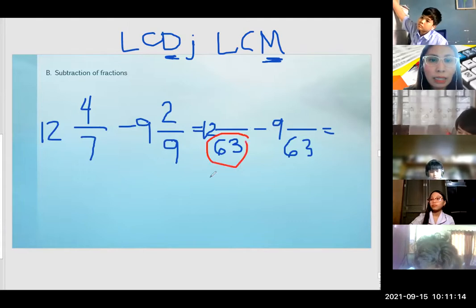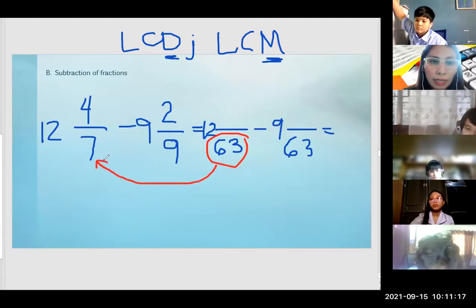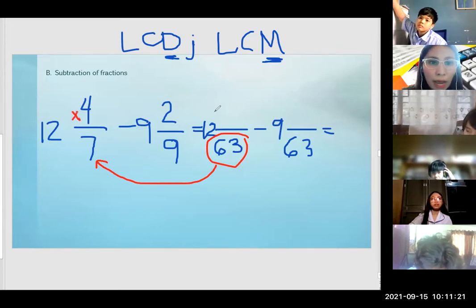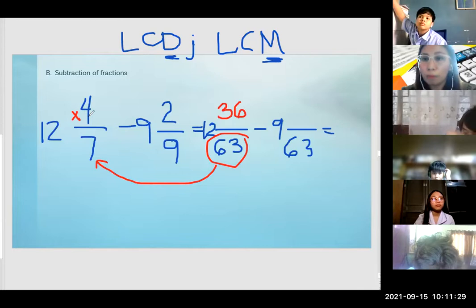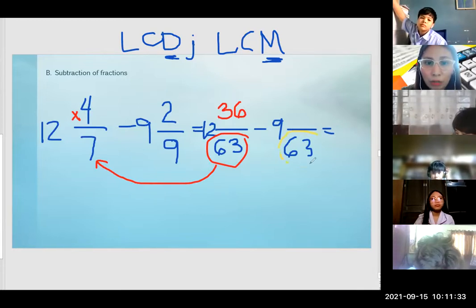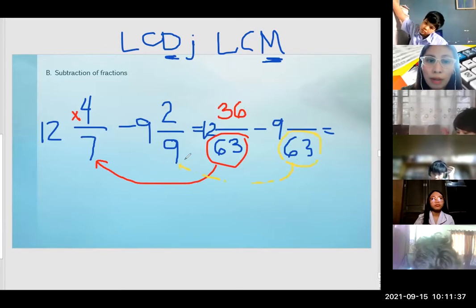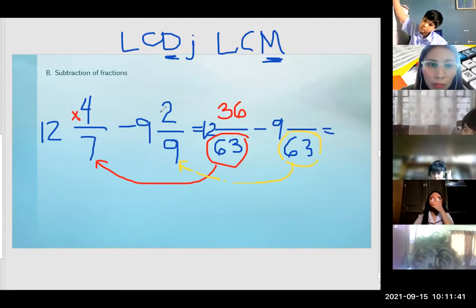63 divided by 7 is 9, times 4 — we have 36. 63 divided by 9 is 7, times 2 — we have 14.